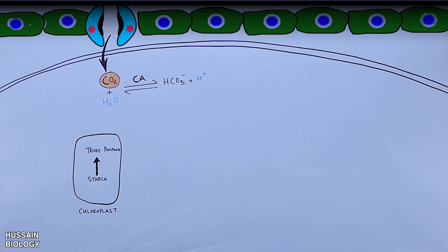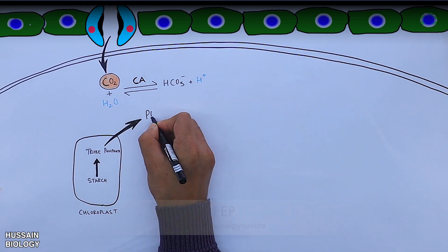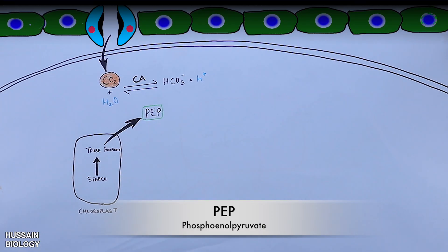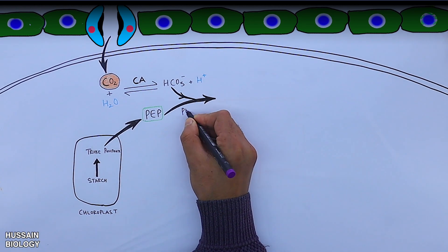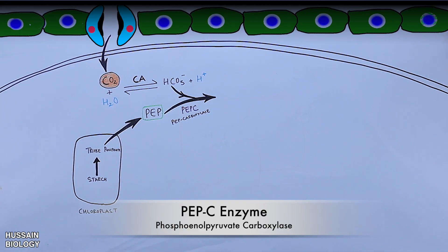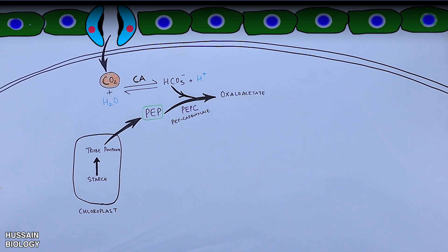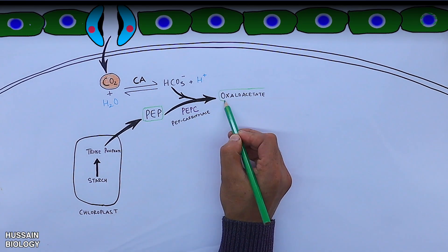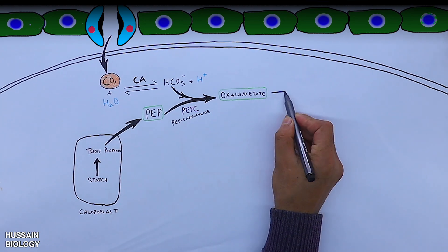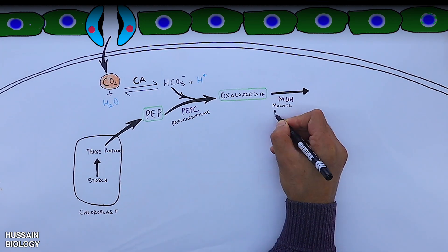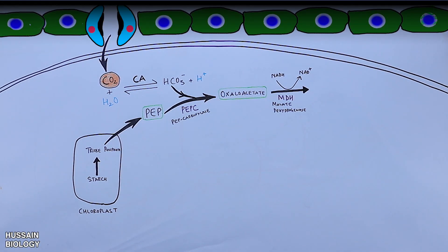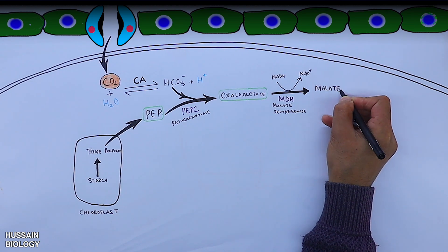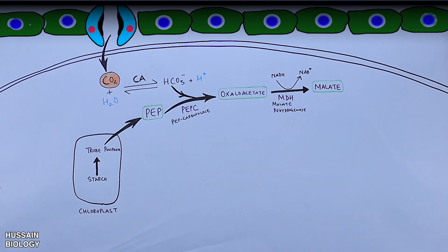Within the mesophyll cell, the chloroplast converts starch into triose phosphate, from which we get PEP (phosphoenolpyruvate). In the next step, PEP reacts with bicarbonate (HCO3⁻) in the presence of PEPC enzyme to produce oxaloacetate.